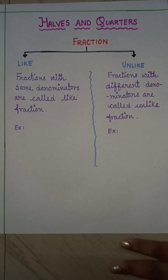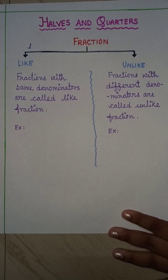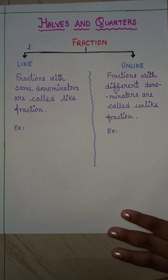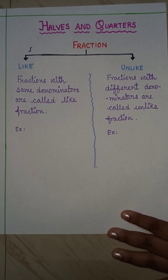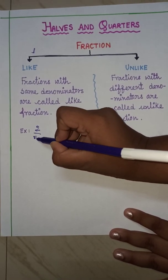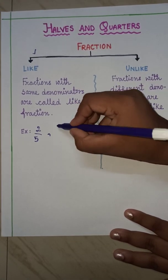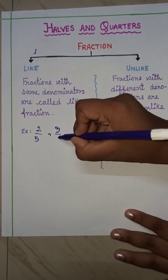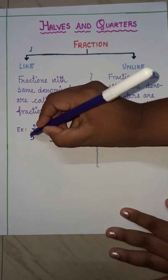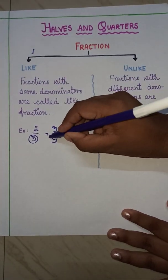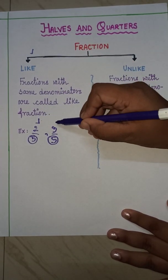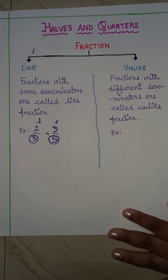Here's the definition of like fractions: fractions with same denominators are called like fractions. Suppose I'm writing a fraction here that is 2 by 5 and another fraction that is 3 by 5. In both the fractions, you can see the denominators are same — here the denominator is 5 and here also the denominator is 5. So these two fractions, 2 by 5 and 3 by 5, are like fractions.